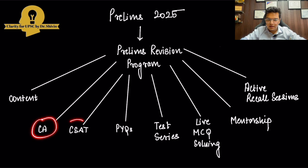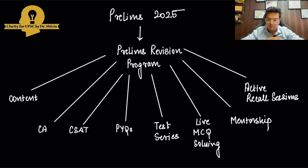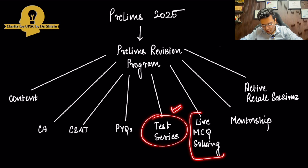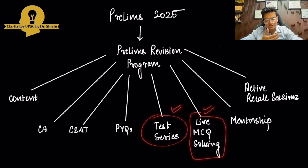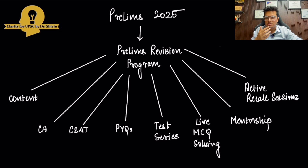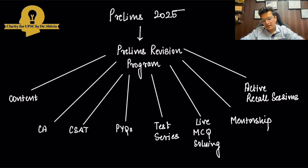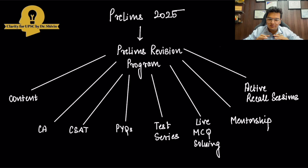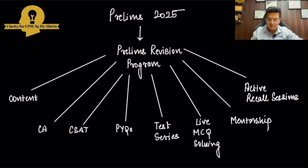We need current affairs, we need to cover CSAT, we need to do previous year questions — not just solve them but actually analyze them — have a test series, have live MCQ solving, which is a very interesting concept I'll explain. We also need mentorship so that if preparation goes off track or we need some mental health support, we have someone to talk to. And ultimately we also need to do active recall, otherwise we won't remember anything.